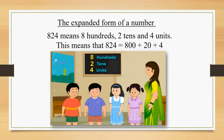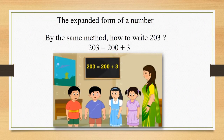824 means 8 hundreds, 2 tens and 4 units. This means that 824 is equal to 800 plus 20 plus 4. By the same method, how to write 203? 203 is equal to 200 plus 3.